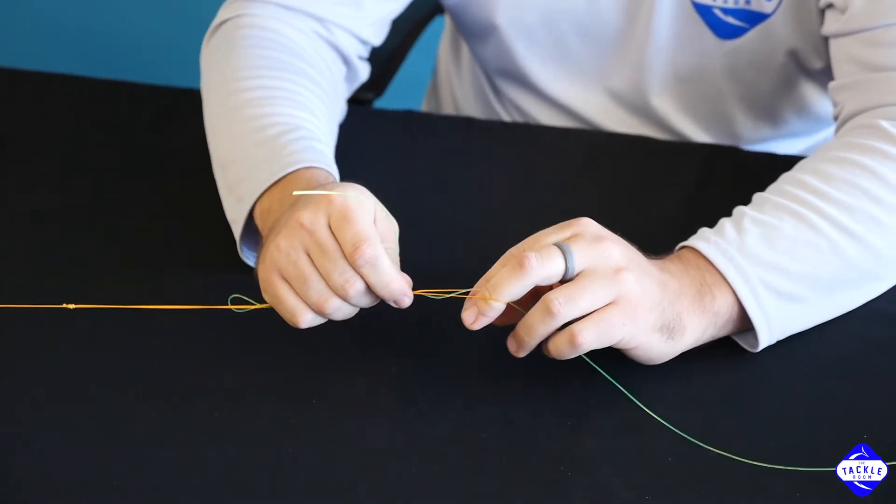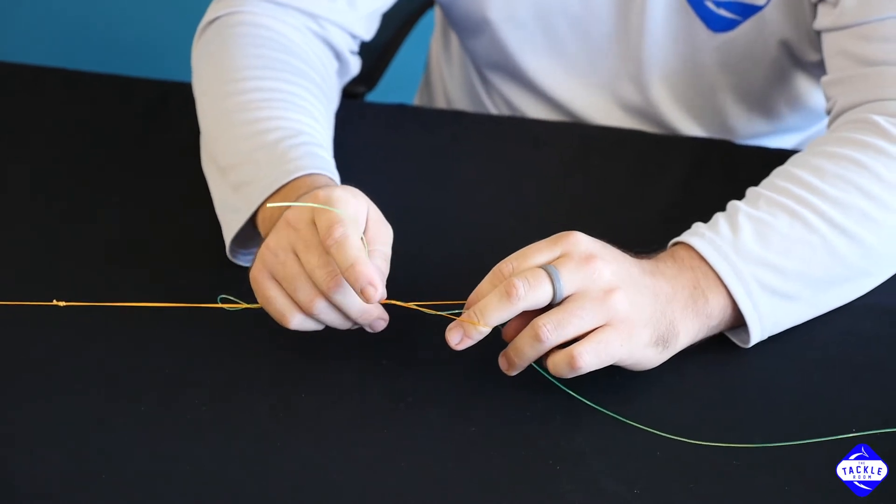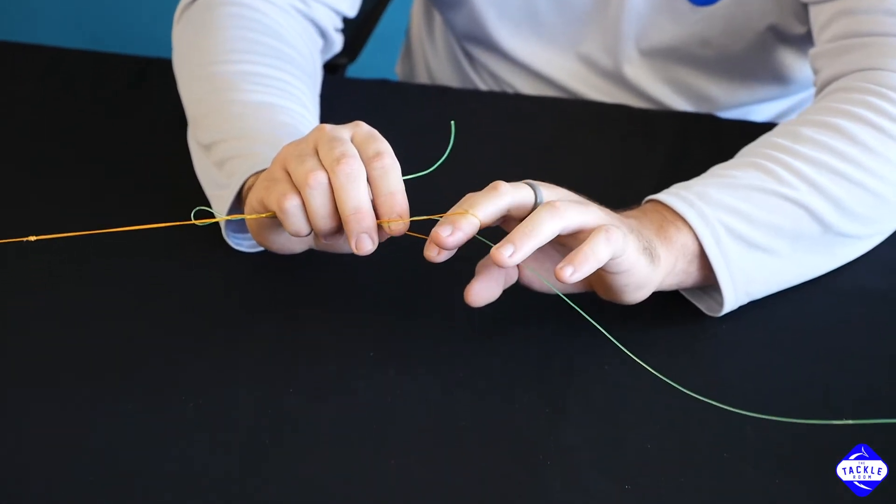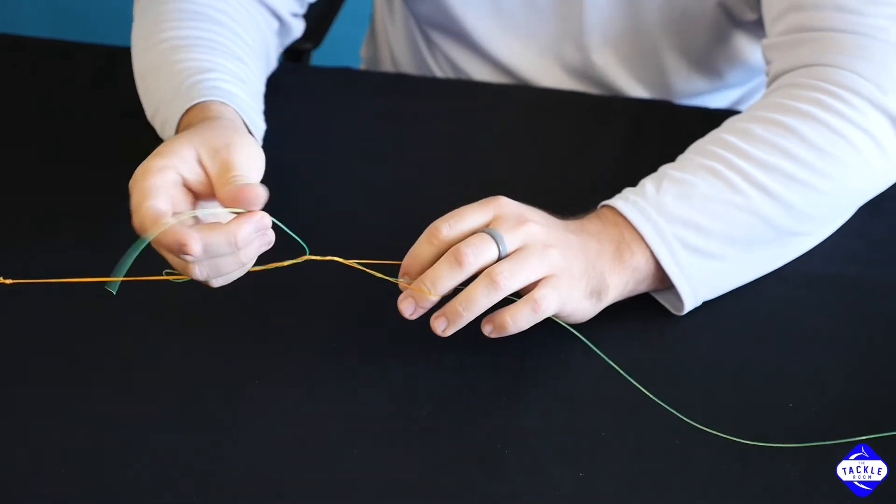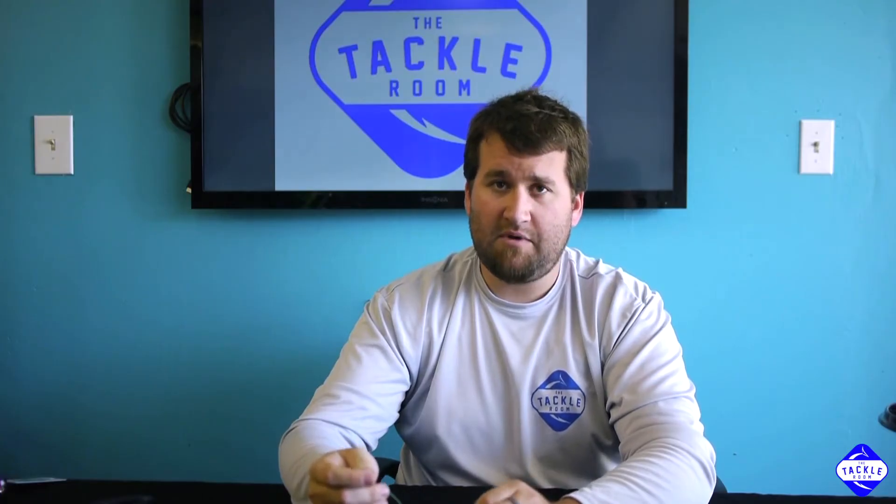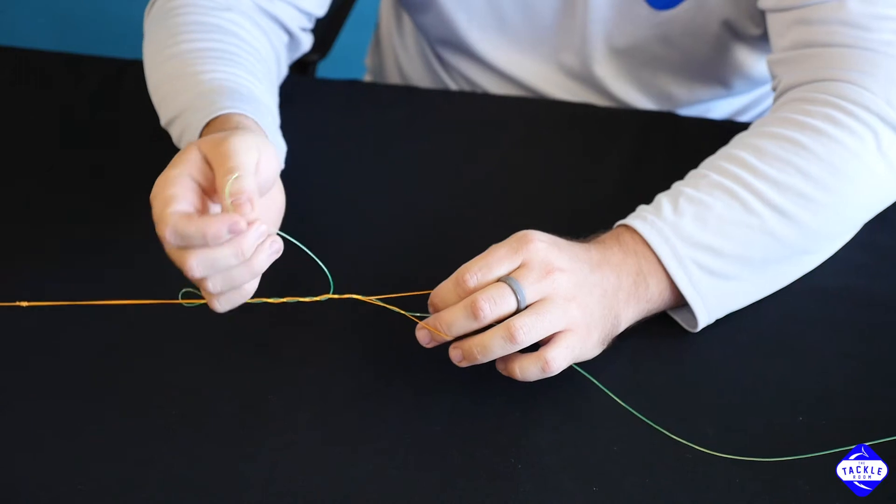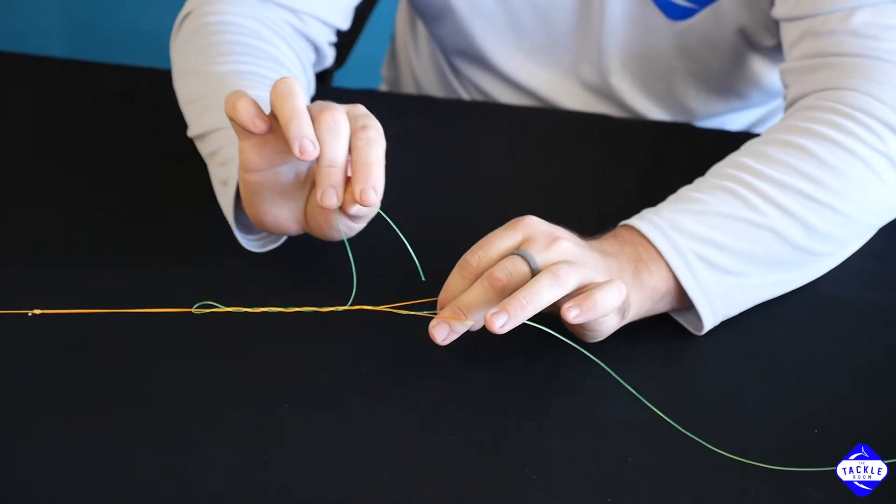Now the most important part of this knot is to go through the loop the same way that you came in. So I went from bottom to top. Now I'm going to go from top to bottom with this tag end. So we're going to shove right through here.